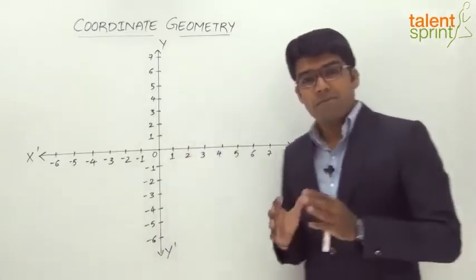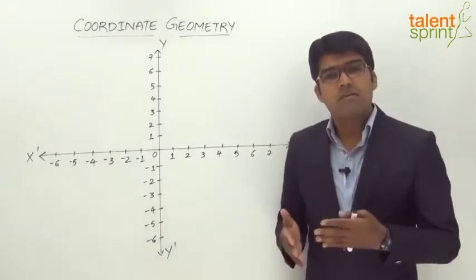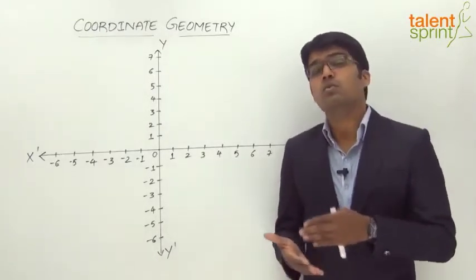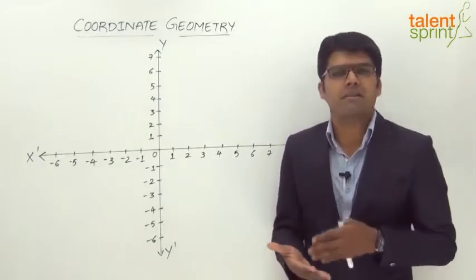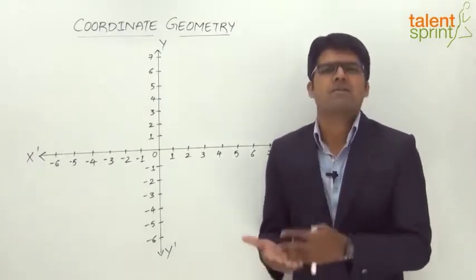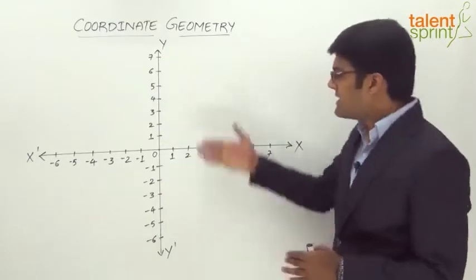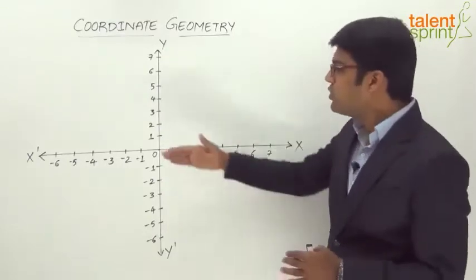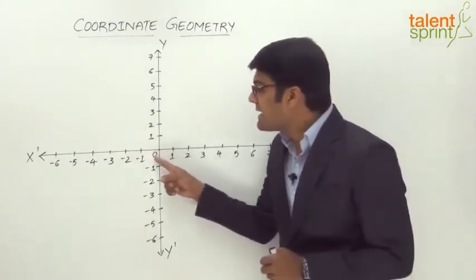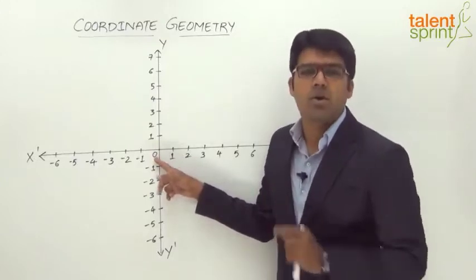A Cartesian coordinate system is described with the help of two mutually perpendicular lines which are known as the coordinate axes. These two mutually perpendicular lines intersect at a point O which is known as the origin.